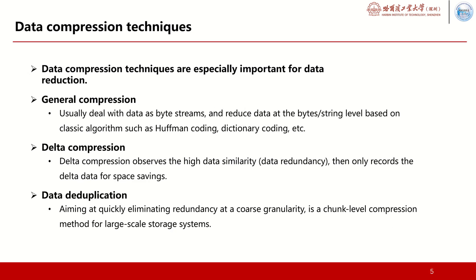I will introduce the differences of the three compression technologies in detail. General compression is designed for reducing redundant data at the byte or string level in a small region, based on classical algorithms such as Huffman coding and dictionary coding. It cannot find data redundancies which are far away from each other. Data deduplication, eliminating redundancy at the chunk level, can accelerate processing speed up to GB per second, so it is practical in large-scale storage systems. But data deduplication can only reduce duplicate files or data chunks.